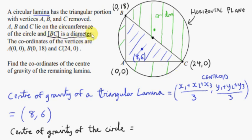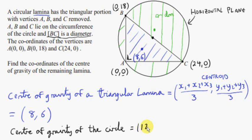Even if we weren't given that BC is a diameter, we could realize it from the fact that this is a right-angle triangle. The line BC is horizontal (same y-values), and AB is vertical (same x-values, both zero), so we have a right-angle triangle inscribed in the circle. When that happens, the longest side is the diameter — the angle in the semicircle is a right angle. The midpoint of the diameter: mean of x-values is (0+24)/2 = 12, mean of y-values is (18+0)/2 = 9. So the center of the circle is (12, 9).